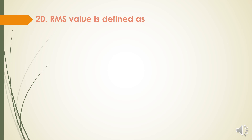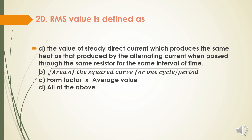Next question: RMS value is defined as — option A: the value of steady direct current which produces the same heat as that produced by the alternating current when passed through the same resistor for the same interval of time; option B: root of area of the squared curve for one cycle per period; option C: form factor into average value. All three are valid definitions of RMS (root mean square) value. Therefore, the answer is option D — all of the above.